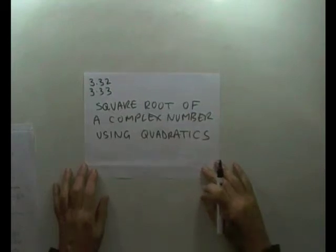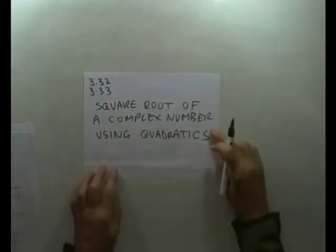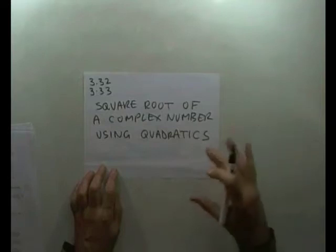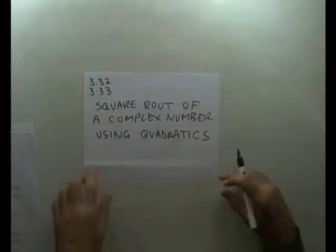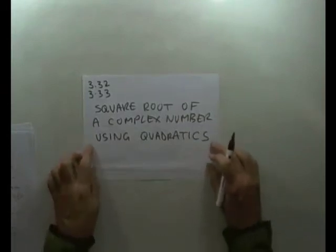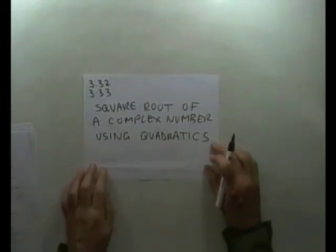Finding the square root of a complex number, not by changing it into polar form and using DeMoivre's theorem to halve the angle and take the square root of the modulus, but by using quadratics to follow on from the previous part.